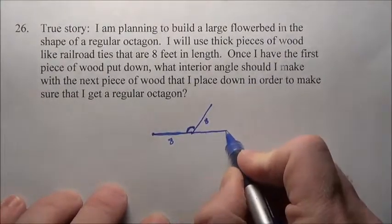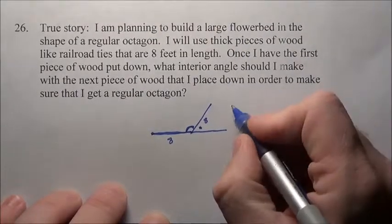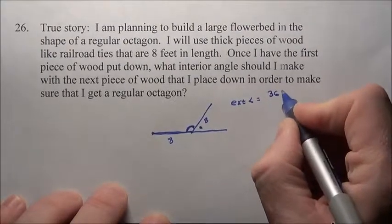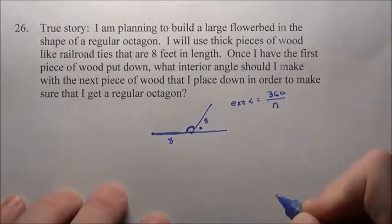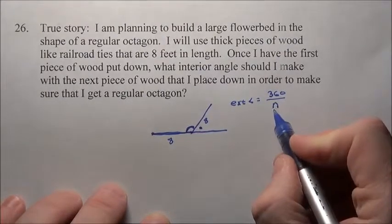the easiest way is to deal with the exterior angle. I know the exterior angle is going to equal 360 divided by the number of sides that I'm dealing with in the regular octagon here. So that's going to be 8.